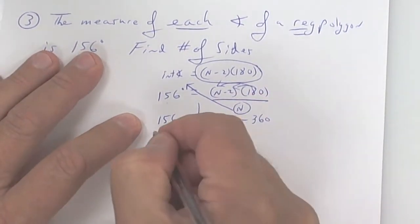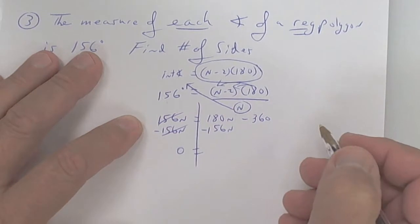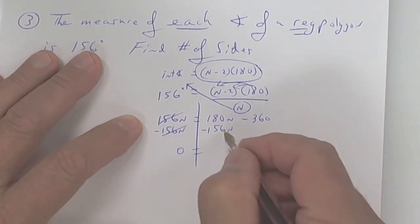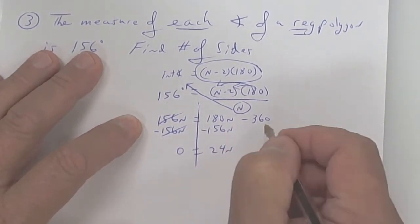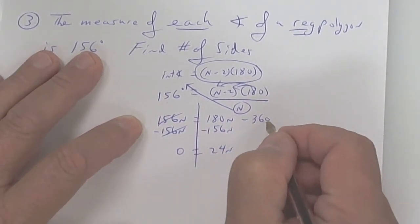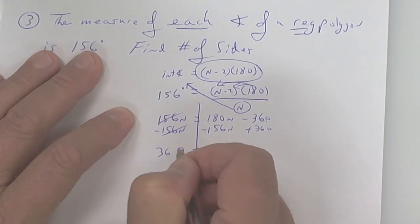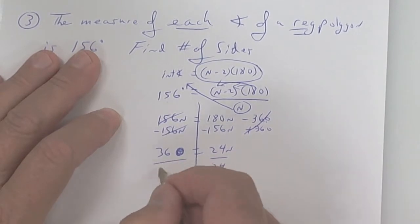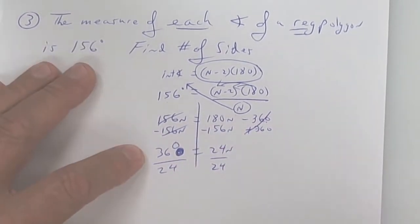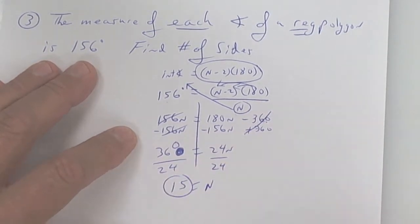Now subtract 156n from both sides — you get zero on the left, and 180n - 156n = 24n. Then add 360 to both sides. So now divide by 24: 360 divided by 24 gives you 15. The polygon has 15 sides.